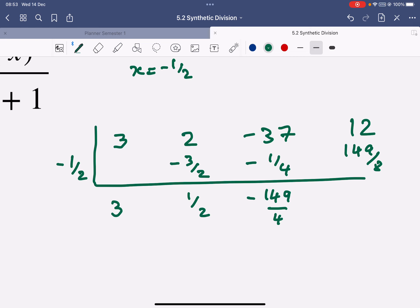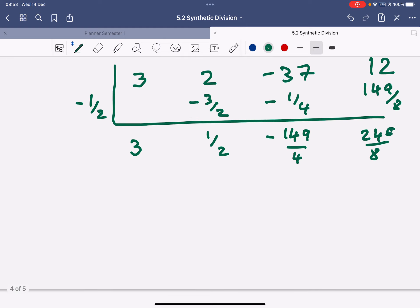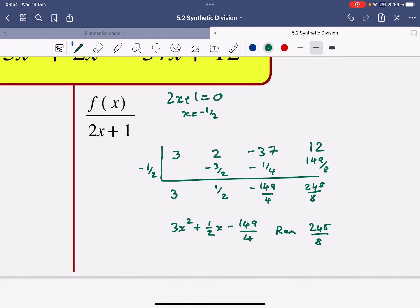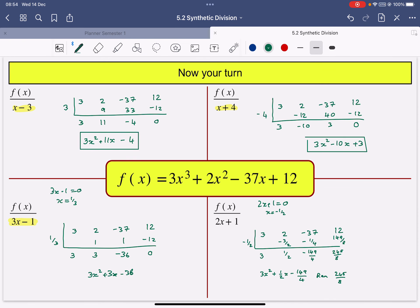Add these together and I will get the remainder of 245 over 8. So this is a bit more complicated because of the numbers. 3x squared plus 1 half of x minus 149 over 4 and a remainder of 245 over 8. But that's how you do all those synthetic division solutions.